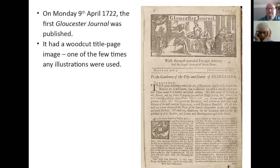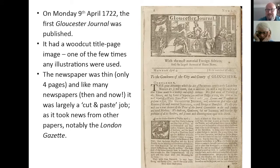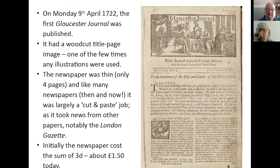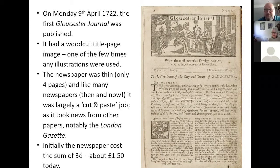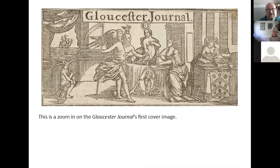On Monday the 9th of April 1722, the first ever Gloucester Journal was published. This is the title page — a woodcut on the title, and it's one of the few times they ever used illustrations in the paper. Very thin, only four pages. Like many newspapers of the time and today, it was largely a cut-and-paste job — they took news from other papers, notably the London Gazette. Initially it cost threepence, which works out at about £1.50 today. You can see straight away it says 'from the London Gazette, Tuesday April the 2nd' — so it takes news that's about a week old from another paper.